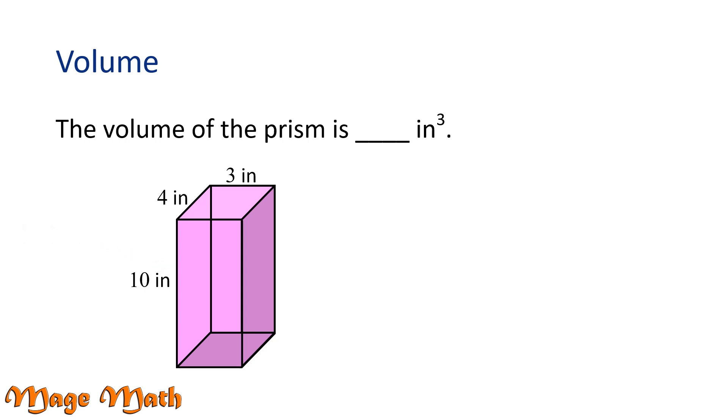To find the volume, we're going to use the formula V equals capital B times H, where capital B equals the area of the base shape and H is the height of the prism.